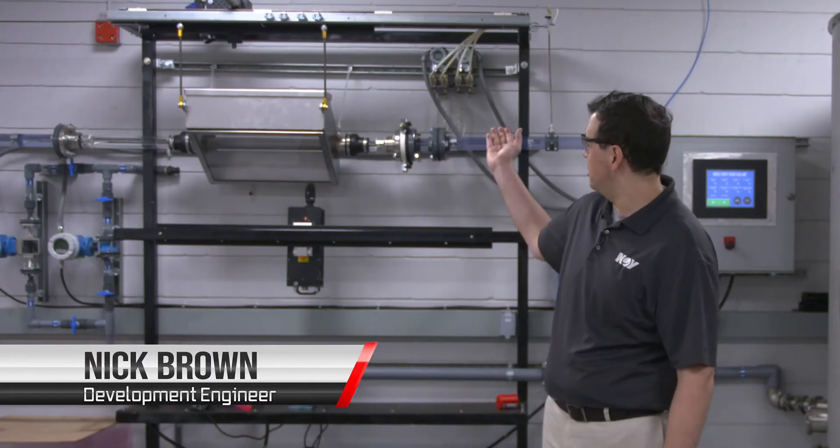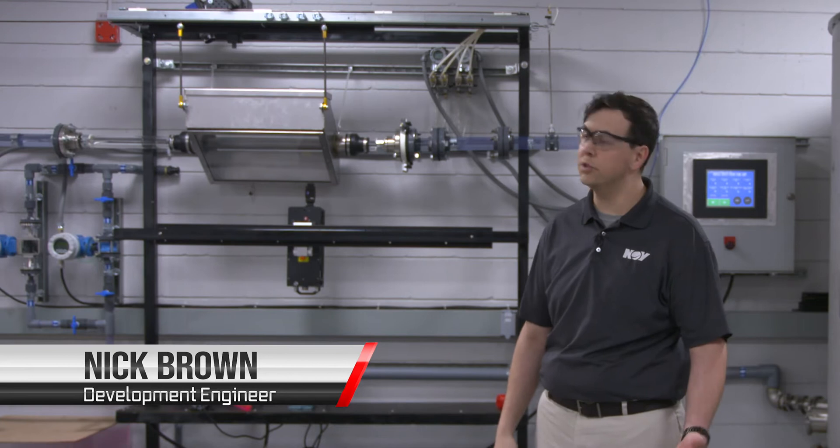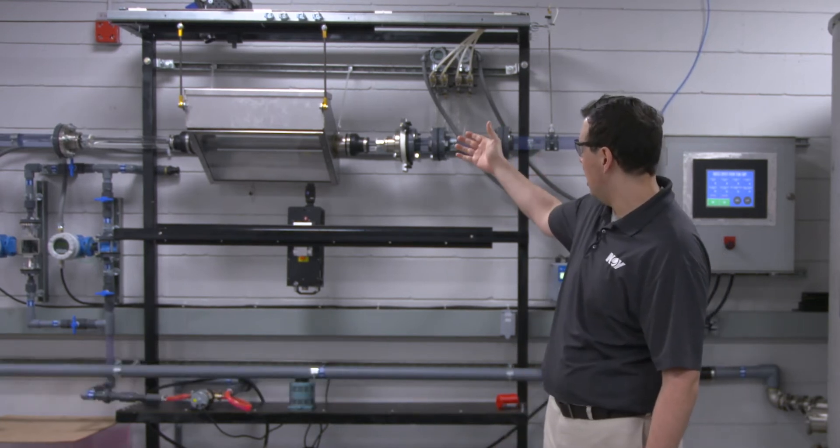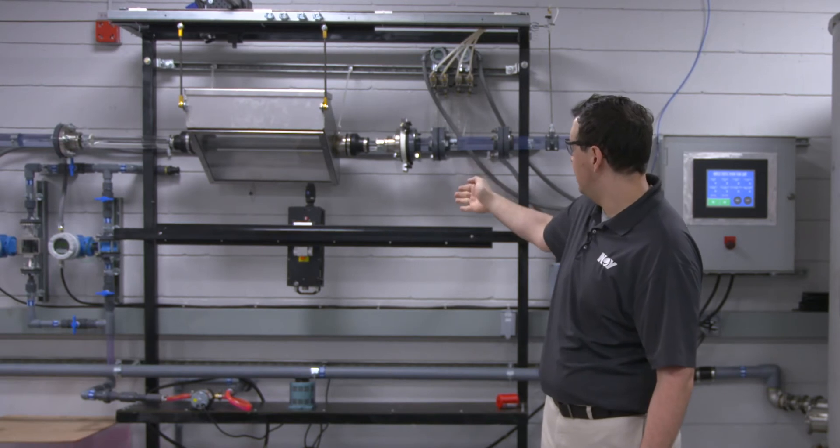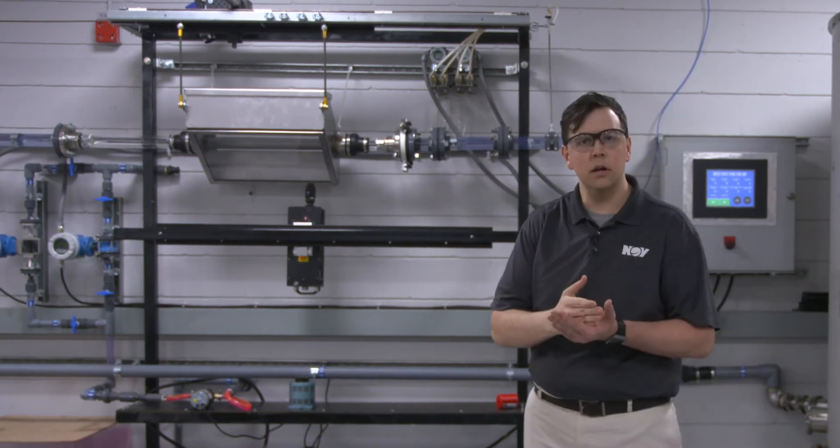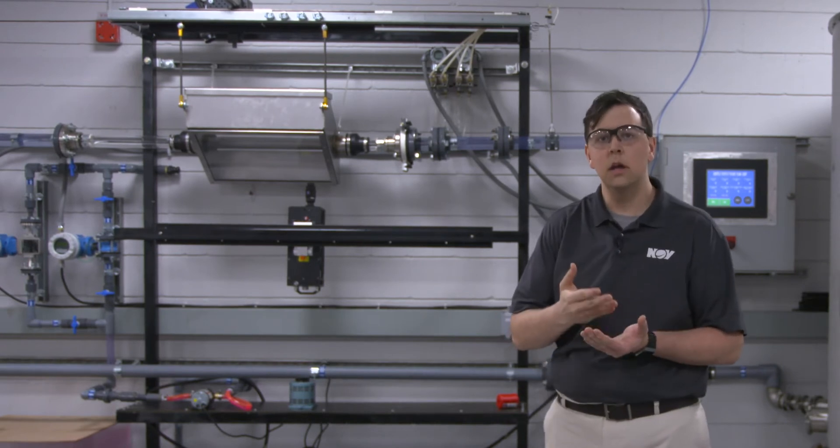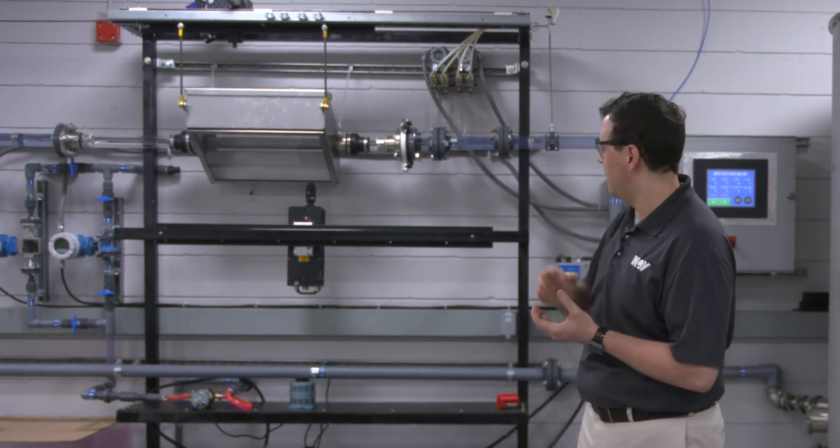This is our static mixer flow loop. It's where we do all of our research and development for our static mixer lines, both current and new. It utilizes a laser box and pointer laser-induced fluorescence setup so that we can take a slice of the flow field and determine the coefficient of variation or the mixedness of the blending based off of the impeller technology.